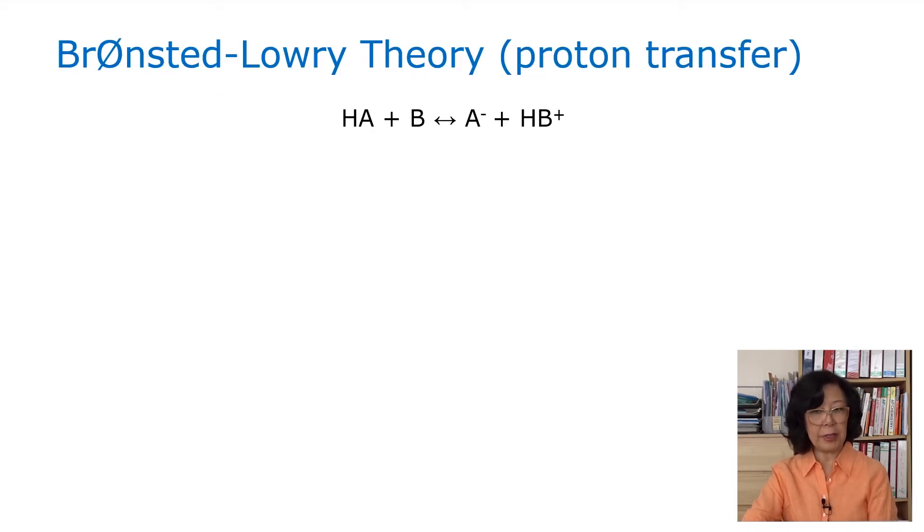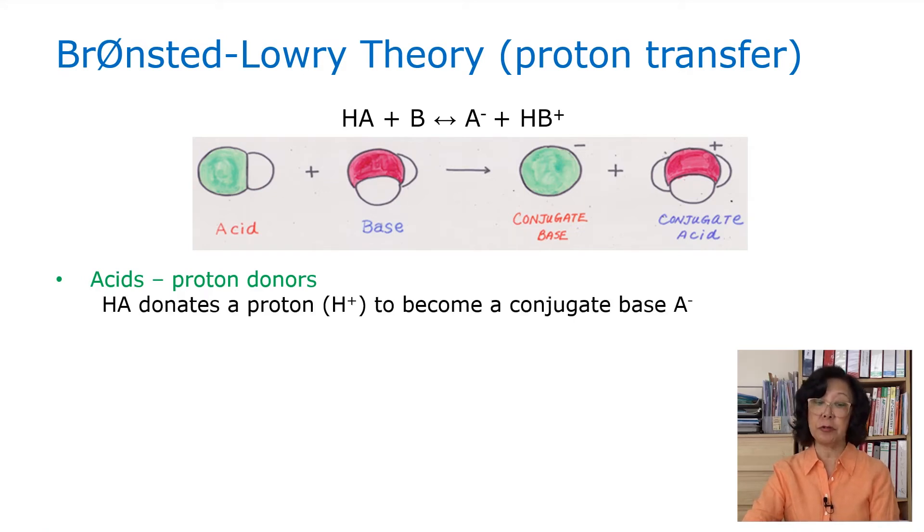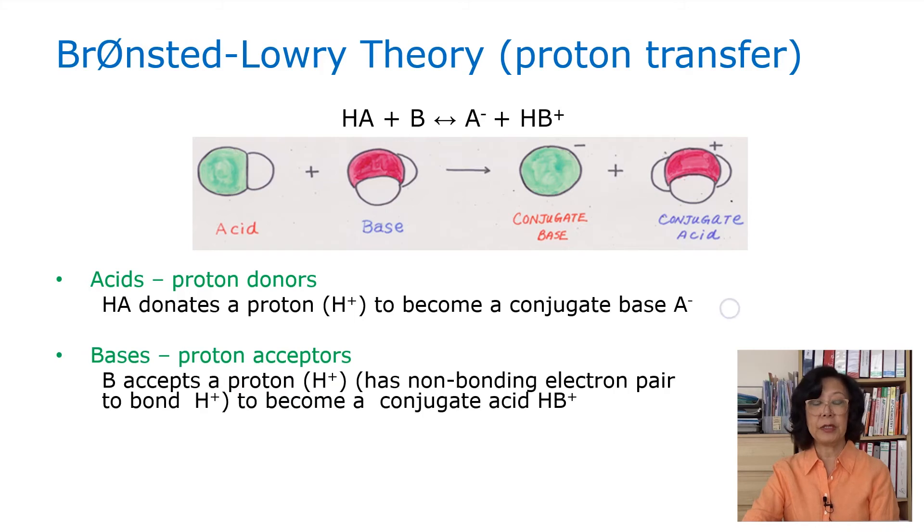The Bronsted-Lowry theory is regarding proton transfer. Here we have a reaction between HA and B to form A- and HB+. The acids are the proton donors, represented by HA in terms of donating a proton, the hydrogen ion, to become the conjugate base, A-. The bases are proton acceptors, represented by B, where it would accept the proton, hydrogen ion, because it has non-bonding electron pair to bond to H+, to become a conjugate acid, HB+. Note that the conjugate acid-base pair only differs by a proton.